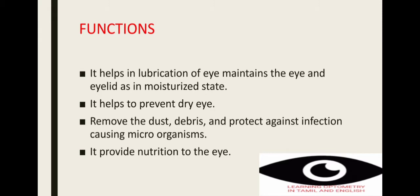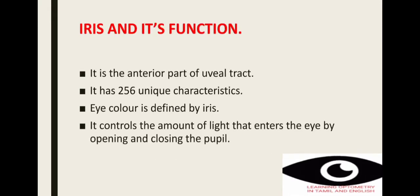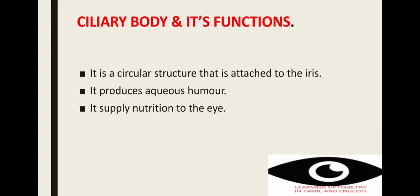Conjunctiva also provides nutrition to our eye. Next is the uvea, which is made up of the iris, ciliary body, and choroid. The iris is the anterior part of the uveal tract. Iris has 256 unique characteristics, and our eye color is defined by the iris. Iris controls the amount of light rays entering the eye by opening and closing the pupil.